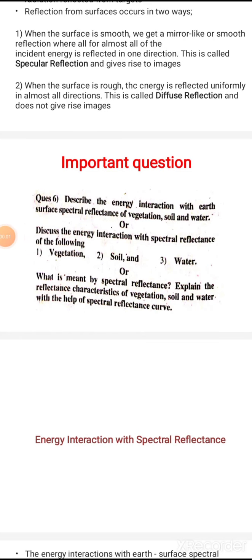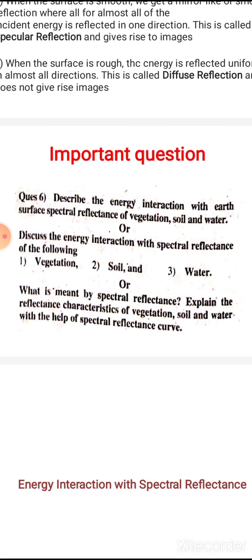The next topic is energy interaction with spectral reflectance. This topic can be asked as: describe the energy interaction with Earth surface spectral reflectance of vegetation, soil, and water; or discuss the energy interaction with spectral reflectance of vegetation, soil, and water; or explain the reflectance characteristics of vegetation, soil, and water with the help of a spectral reflectance curve.